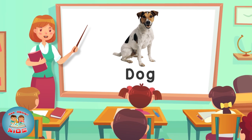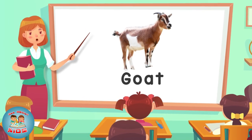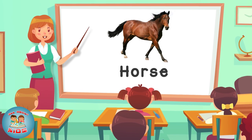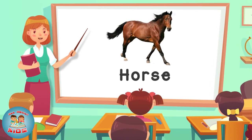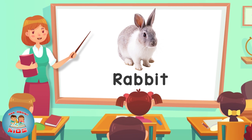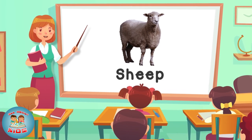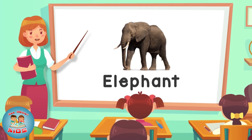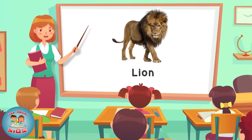Dog — this is a dog. God — this is a God. Horse — this is a horse. Rabbit — this is a rabbit. Sheep — this is a sheep. Elephant — this is an elephant. Lion — this is a lion.